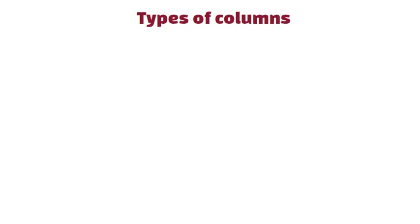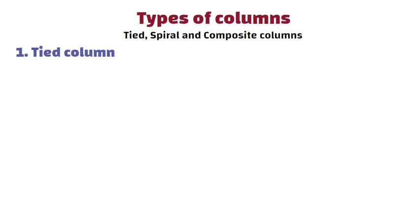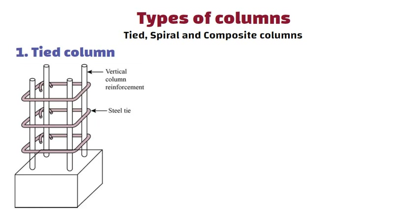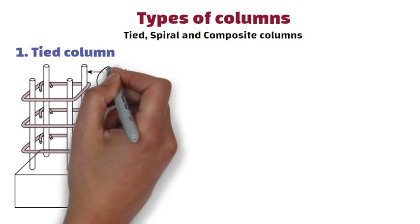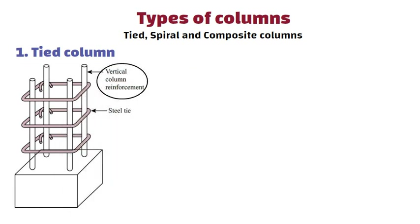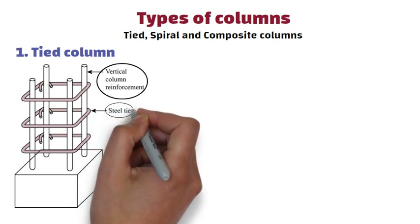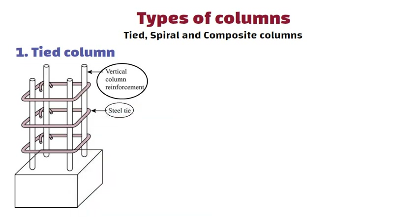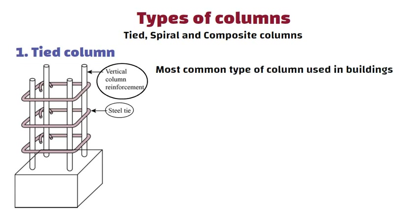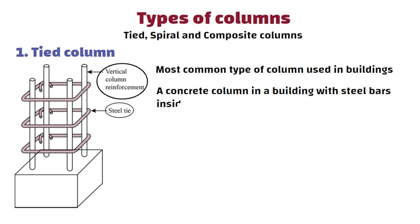Types of Columns: Some common columns include tied, spiral, and composite columns. 1. Tied Column: A tied column is made by using vertical bars, i.e. reinforcement, held together by horizontal ties or hoops. It is the most common type of column used in buildings. Example: a concrete column in a building with steel bars inside held together by steel ties.